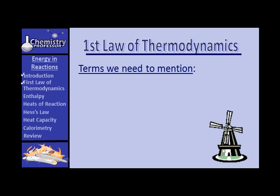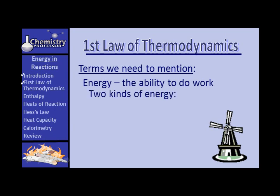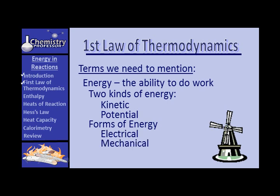There are some terms we need to be sure we're on the same page with. The first is energy, defined as the ability to do work. There are two kinds of energy: kinetic energy, which is energy in motion — energy being absorbed, energy being produced — and potential energy, which is energy of position. You might also think of it as stored energy. There are numerous forms of energy, such as electrical energy, mechanical energy, and chemical energy.